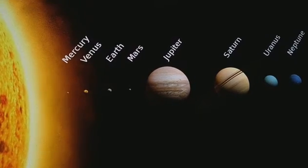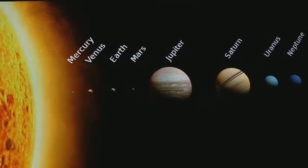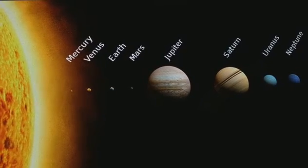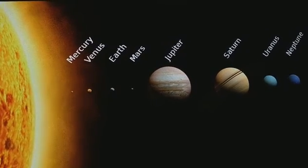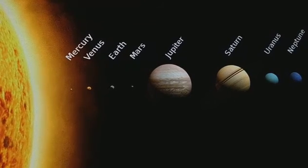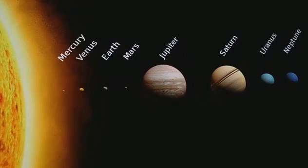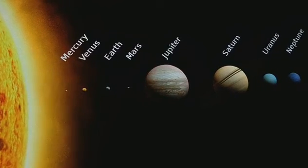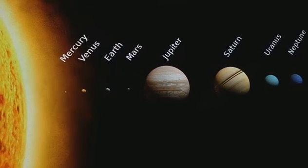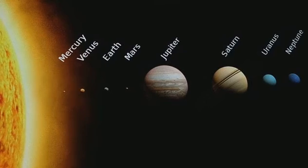We can say the solar system is the family of the sun, and the sun is the head of the family. The eight planets in the solar system are its eight family members. In order of distance from the sun, can you remember the sentence? My very easy method just speeds up nothing. So the eight planets are: Mercury, Venus, Earth, Mars, Jupiter, Saturn, Uranus, and Neptune. And Pluto is the dwarf planet.